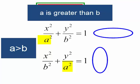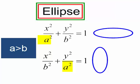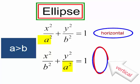If a is under the x-squared term, I will have a horizontal ellipse. If a is under the y-squared term, I will have a vertical ellipse. Let's look at that a little closer.